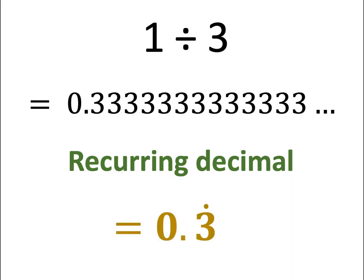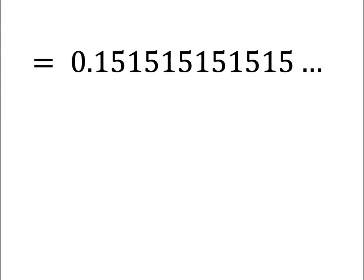How about this recurring decimal? How can we simplify how this is written? Pause and have a quick think. The answer would be 0.15 with the recurring dot above the 1 and 5, as they are repeating decimals.